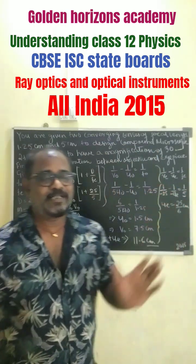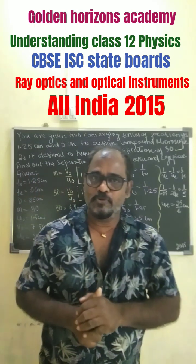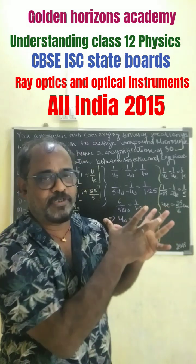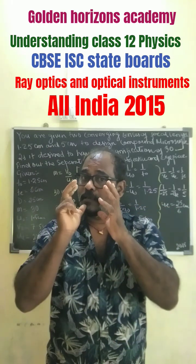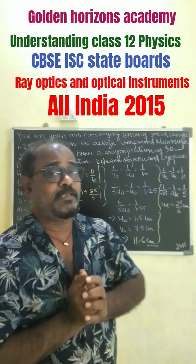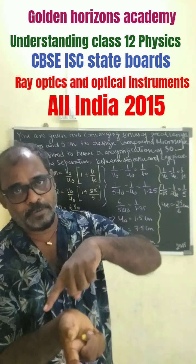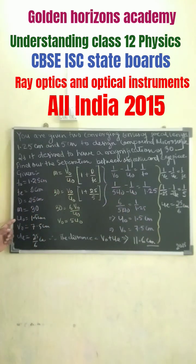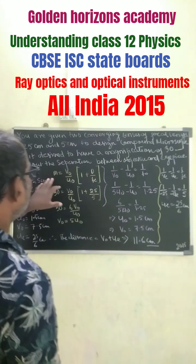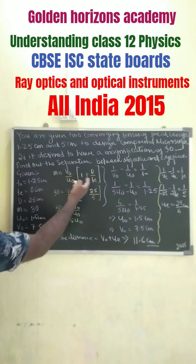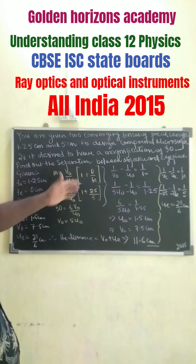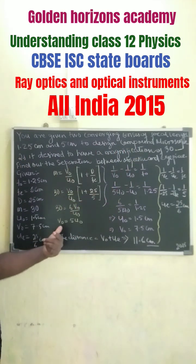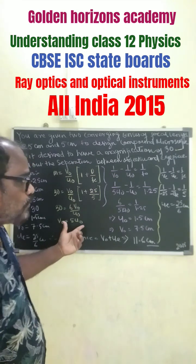To find the resultant answer, you must know the image distance of the objective lens and the object distance of the eyepiece. So for that we need U₀, V₀, and U_e. We have been given magnification, so putting M equals 30 as given, from here we finally get the relation between V₀ and U₀.